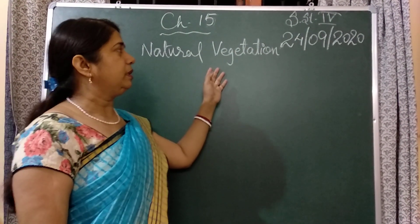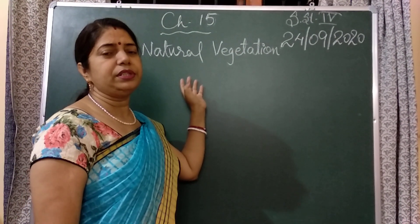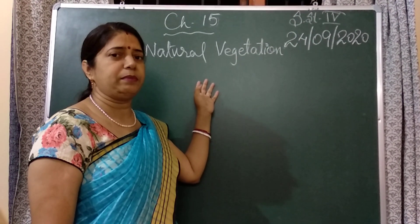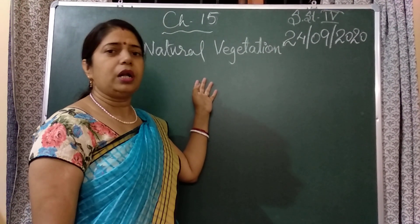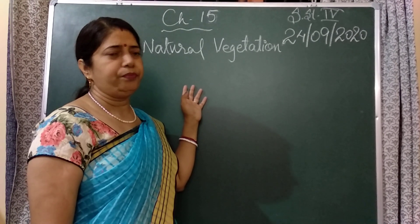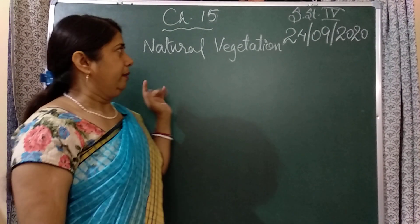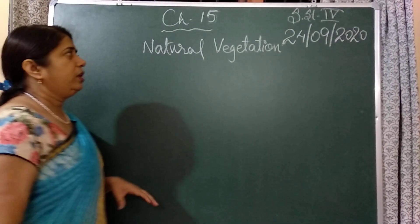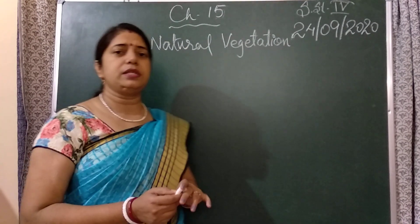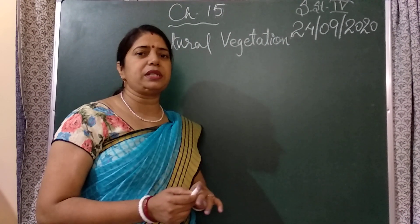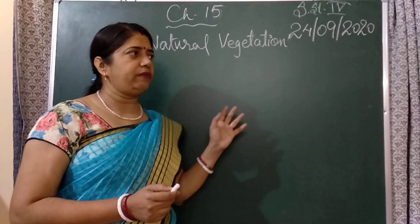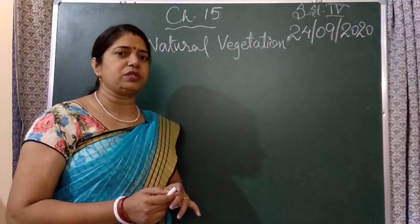Natural Vegetation — the meaning of Natural Vegetation is related to the forest which grows by themselves. No human beings ask them to grow. So if we talk about Natural Vegetation, let us first discuss what topics come into this. Before we go to the text, let's find out some of the topics.